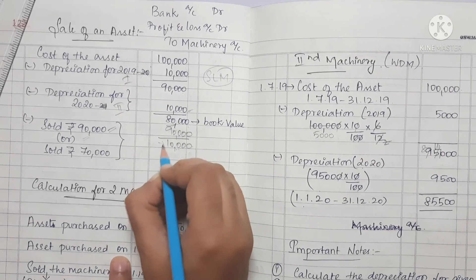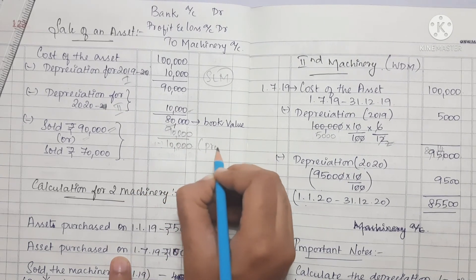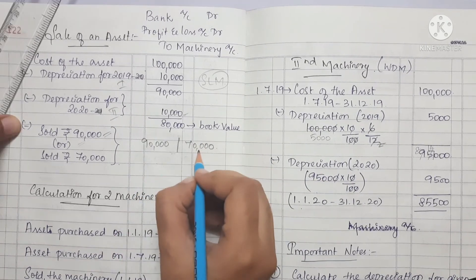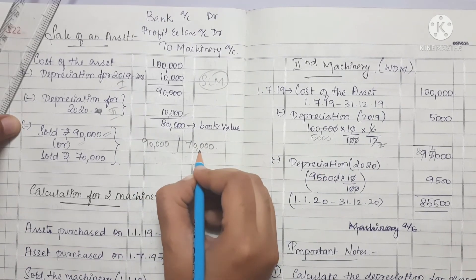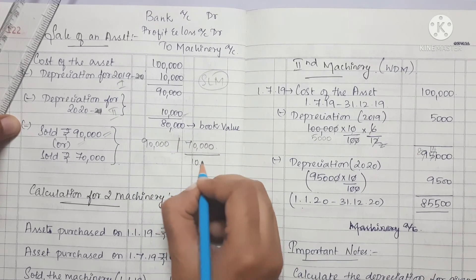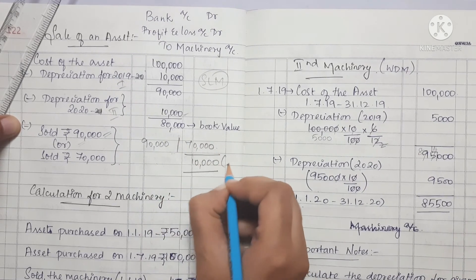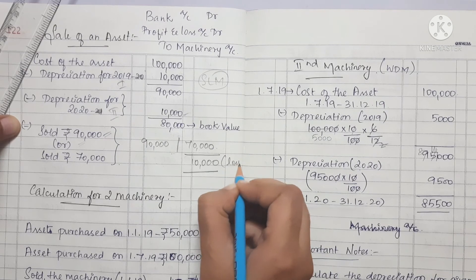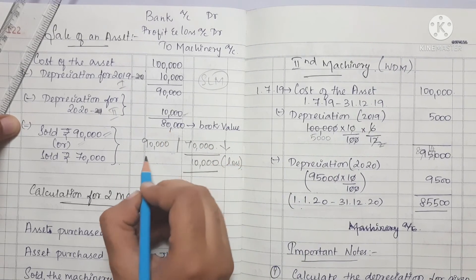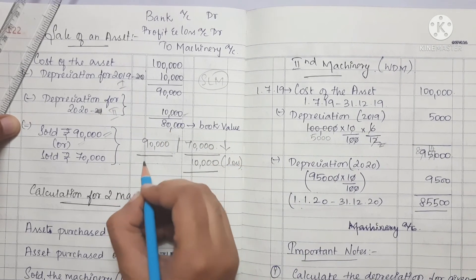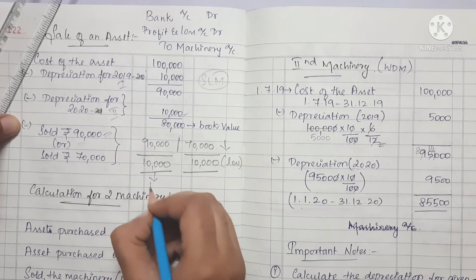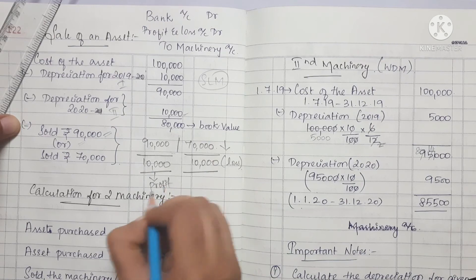If the sale price is Rs. 90,000 and the book value is Rs. 80,000, then we have a profit of Rs. 10,000. If the sale price is Rs. 70,000 against a book value of Rs. 80,000, that means we have a loss of Rs. 10,000, because we sold it for less than the book value.